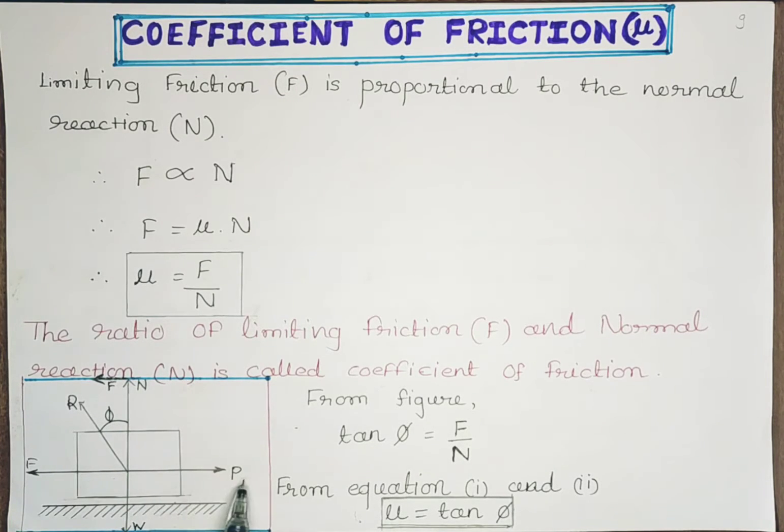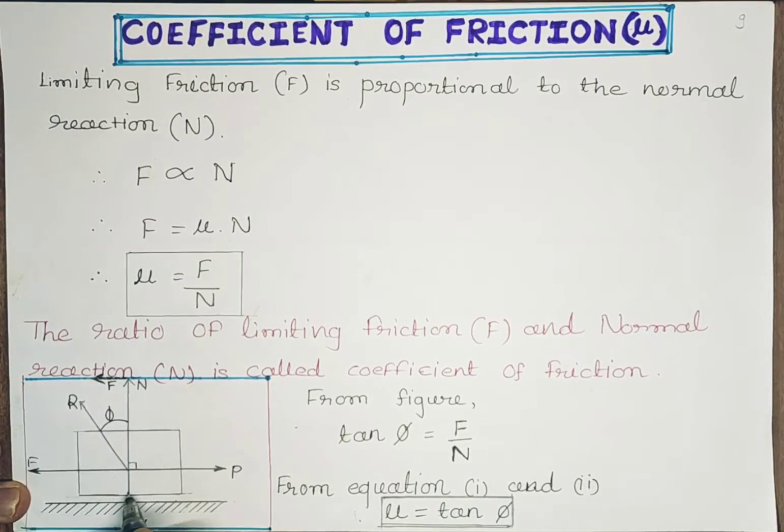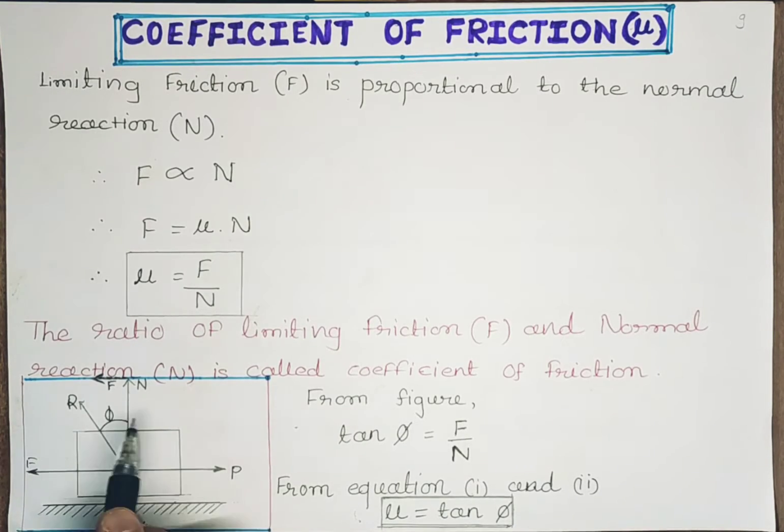This is the figure we discussed last time, where there is an external force P acting on the right hand side and the frictional force F acting on the left hand side, opposite to the external force. Weight acts downwards towards the center of gravity of the earth or towards the rough surface. There is a reaction normal to the plane, at 90 degrees from the rough surface, symbolized by capital N.